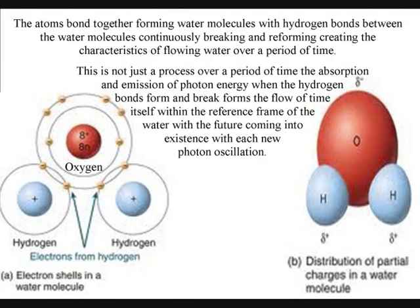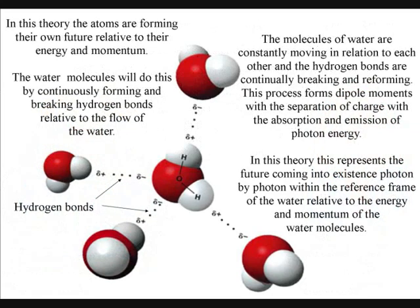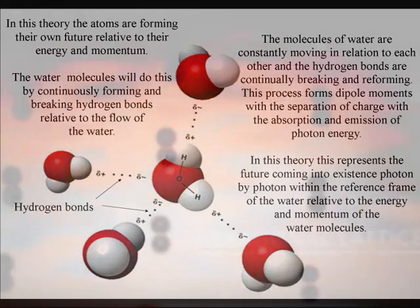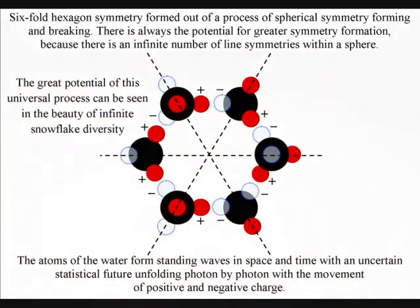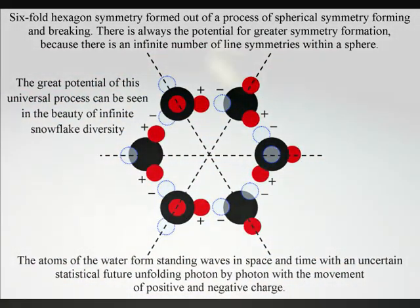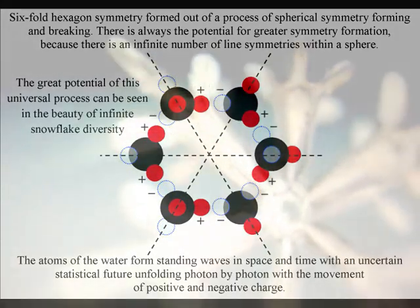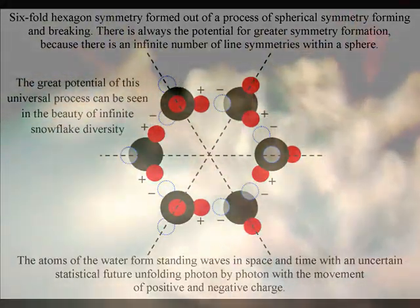In this theory, this represents the future unfolding photon by photon within the water. Just a change in environmental temperature can cause the atoms to bond together, with the process forming the uncertainty needed for infinite snowflake diversity.